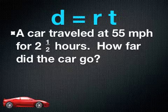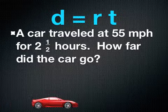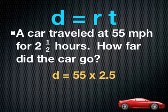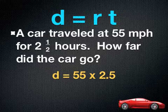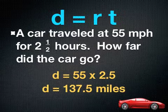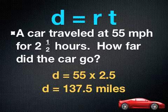So plugging in what I know to the formula, I'm going to have distance equals 55, that was my rate, miles per hour, times 2.5, and that was my time hours. When you multiply 55 times 2.5, you get that the distance was 137.5 miles.